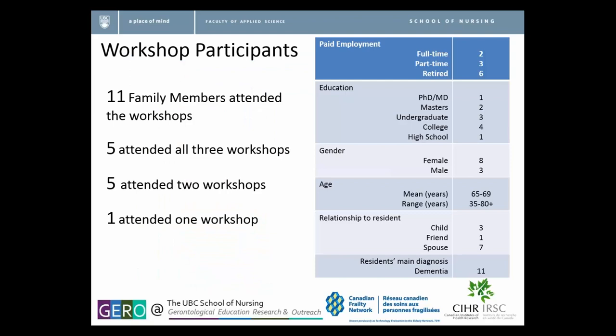In terms of the workshop participants, it was still a fairly well-educated group with more women than men. Not surprisingly, the majority who ended up attending were spouses, because children in the younger age group probably couldn't attend due to work commitments. All of the people who ended up participating had a relative with a primary diagnosis of dementia. Of the 11 people who signed up for the workshops, five attended all three workshops, five attended two workshops, and one attended one workshop.